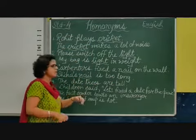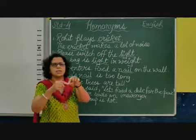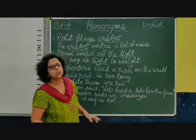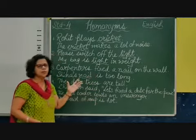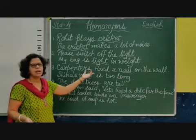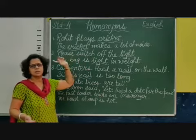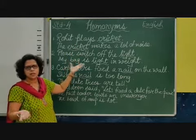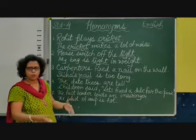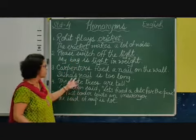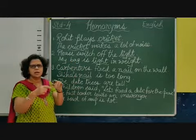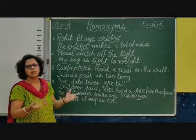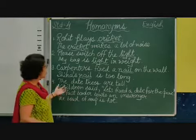And here 'Sheena's name is too long' — it is the name of a human being. So these two have different meanings. One is the iron nail which we fix to attach things to the wall or furniture. The other is the nail which is the part of our body that we have on our fingers or toes.